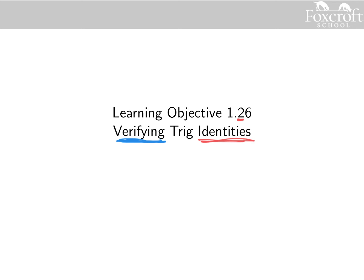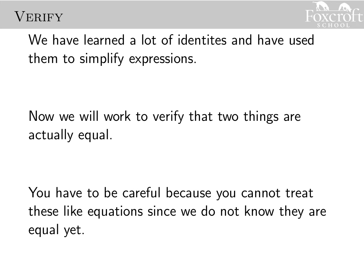We think two things are equal and we want to show that they are — it's a completely different way of looking at an equation. We've looked at a lot of different identities and used them to simplify expressions. You cannot treat these like equations; you can't add two to both sides. You can only work on one side at a time until you show that they're equal.